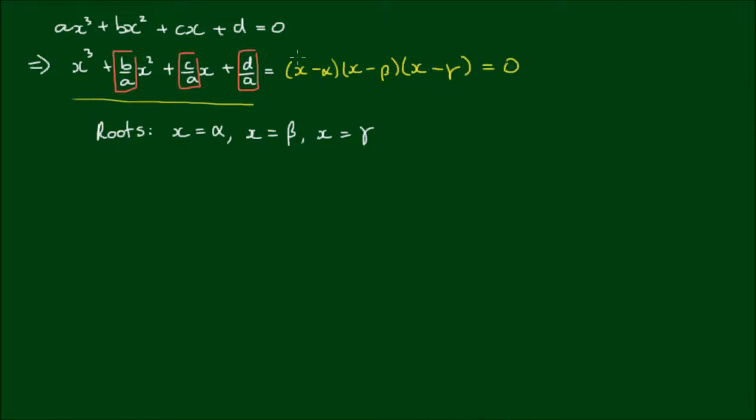And once I have expanded all these terms out and equated all of the coefficients to their respective terms, I get these relationships between the roots and the coefficients. So first of all, α plus β plus γ, so the sum of all the roots, is equal to negative b on a. So negative of the x² coefficient.